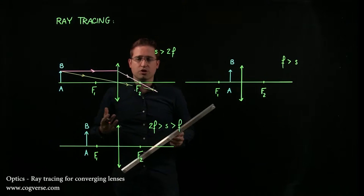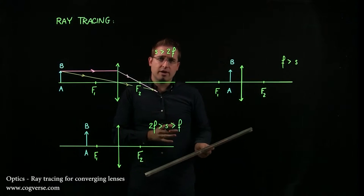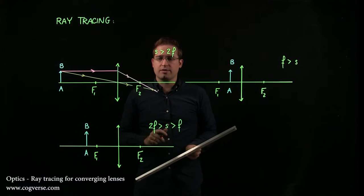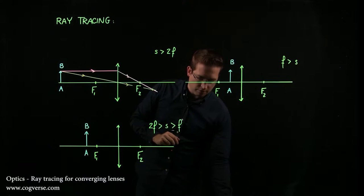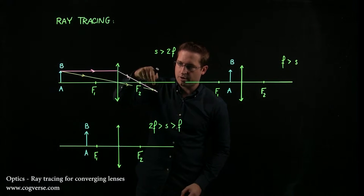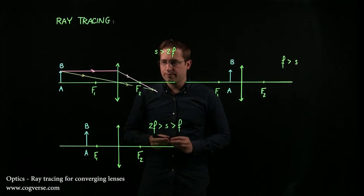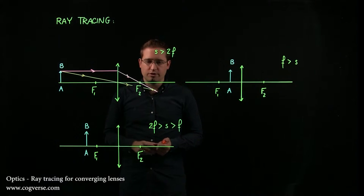And I know that images form where emerging rays intersect or appear to intersect. They actually intersect here, so I already know that my image is going to form there and will be downward, so it will be inverted compared to my object.